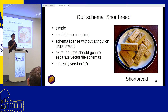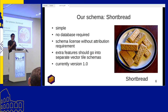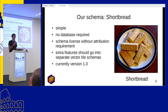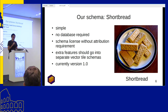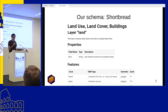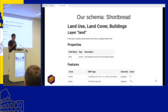So we created our own vector tile schema called Shortbread. It's simple, no database is required for generation, and our schema license requires no attribution — it's just the WTFPL (What The F*** Public License). Extra features should go into separate vector tile schemas. We have currently released version 1.0. This is the full vector tile schema documentation with all the features and individual feature classes — just have a look at the website.